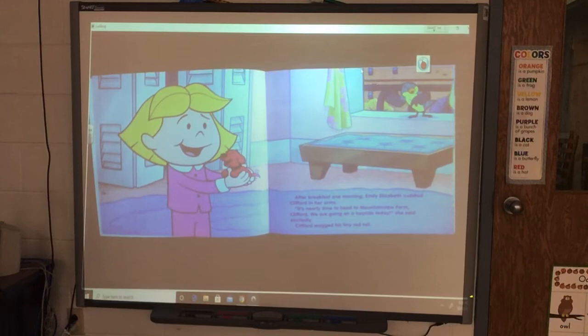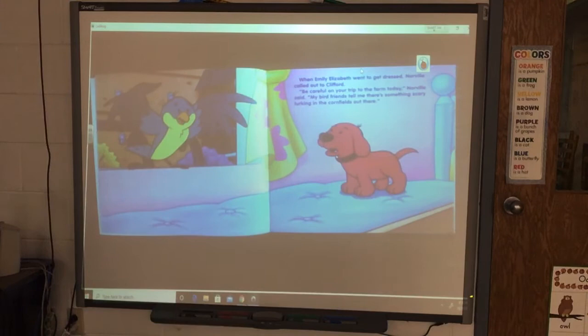After breakfast one morning, Emily Elizabeth cuddled Clifford in her arms. It's nearly time to head to Mountain View Farm, Clifford. We are going on a hayride today, she said excitedly. Clifford wagged his tiny red tail. When Emily Elizabeth went to get dressed, Norval called out to Clifford. Be careful on your trip to the farm today, Norval said. My bird friends tell me there is something scary lurking in the cornfields out there.